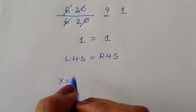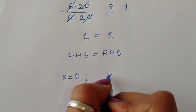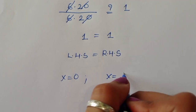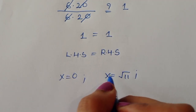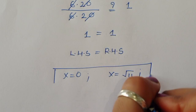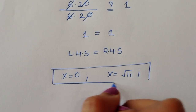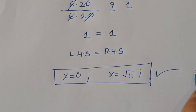We got two solutions for this equation: x = 0 (real solution) and x = i√11 (complex solution). These are the two solutions for this equation. Thank you.